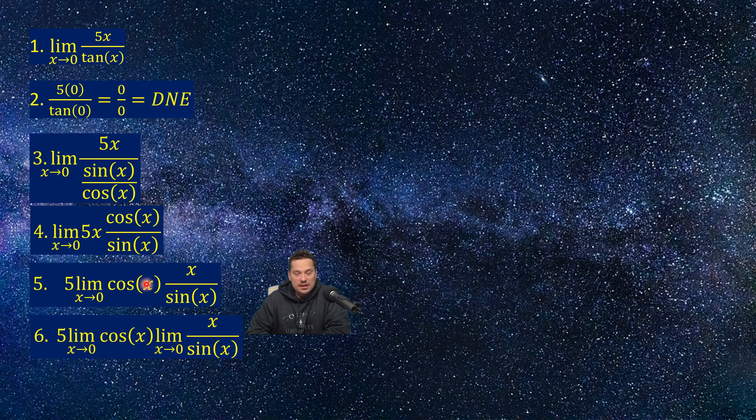meaning cosine multiplying x over sine x, I can rewrite this on step 6 as cosine x multiplying the limit of x over sine x. That's a basic property of limits.